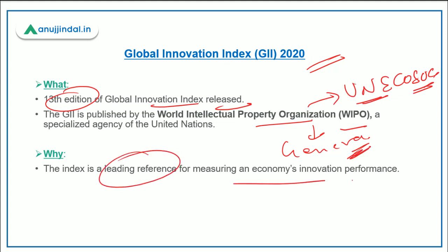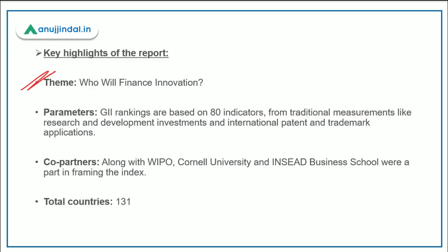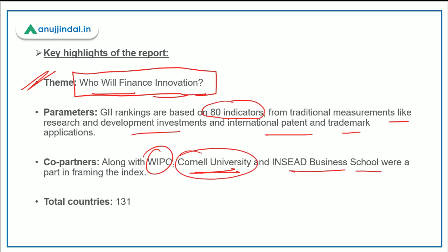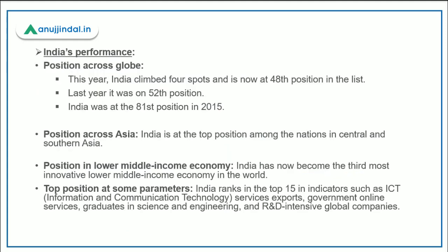This index is a leading reference for measuring economies' innovation performance. This year's theme was 'Who Will Finance Innovation?' There were a total of 80 indicators covering traditional measurements like R&D investments, international patents, and trademark applications. Co-partners along with WIPO include Cornell University and INSEAD Business School. A total of 131 countries were mapped under this report.